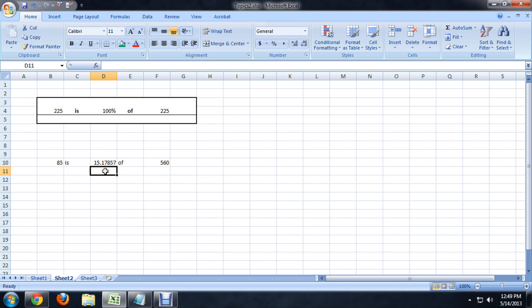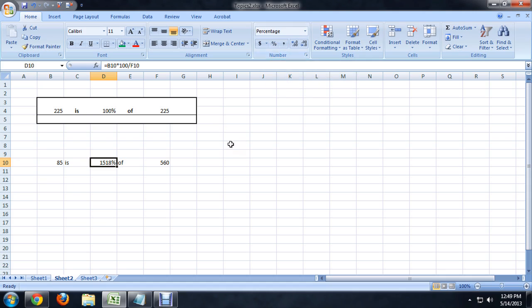And so it gives us this really kind of confusing looking decimal number. But we can format that as a percent pretty quickly. Let's come up to the number tab here on the home tab, and we're going to push percent. So it's styled it as a percent.